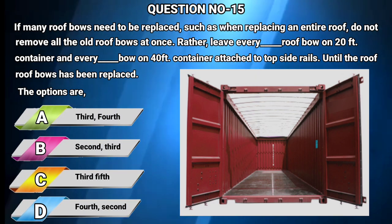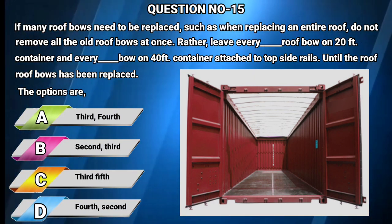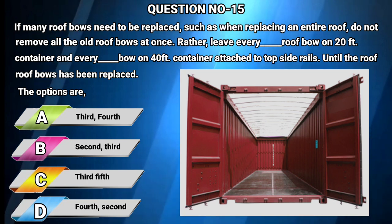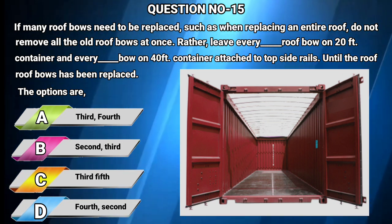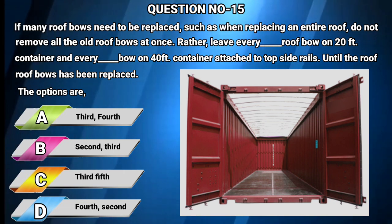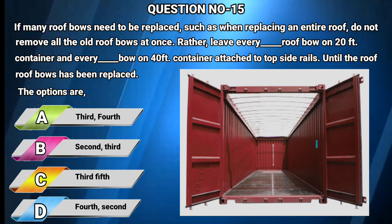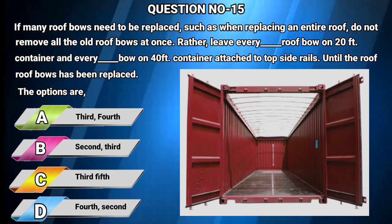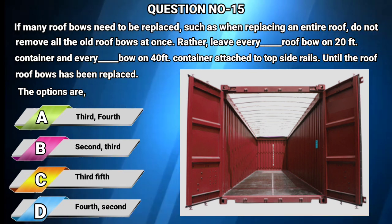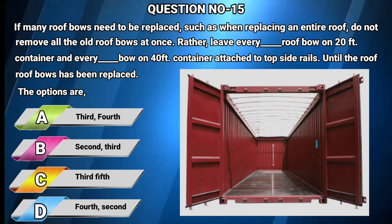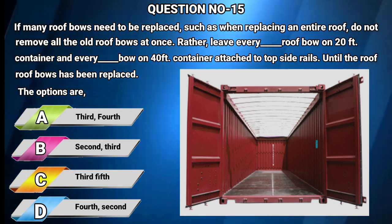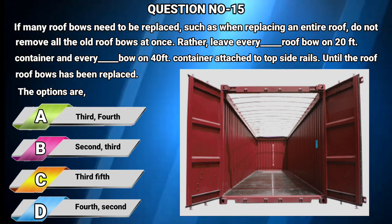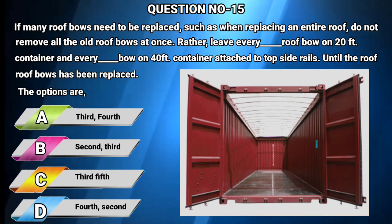Question number 15: If many roof bows need to be replaced, such as when replacing an entire roof, do not remove all the old roof bows at once. Rather, leave every 3rd roof bow on a 20-foot container and every 4th bow on a 40-foot container attached to the top side rails, until the roof bows have been replaced. Options: A) 3rd, 4th; B) 2nd, 3rd; C) 3rd, 5th; D) 4th, 2nd. The answer is A: 3rd roof bow for 20-foot and 4th for 40-foot containers.